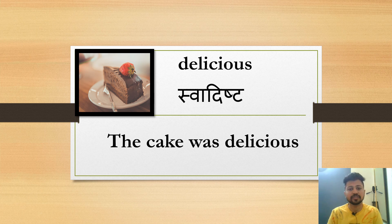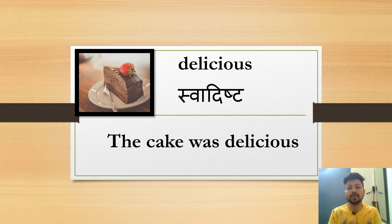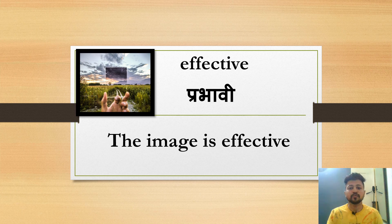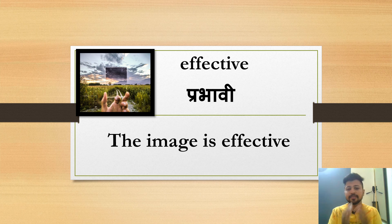Delicious means swadisht. 'The cake was delicious.' Next word is effective, E-F-F-E-C-T-I-V-E, effective, meaning prabhaavi. 'The image is effective.'